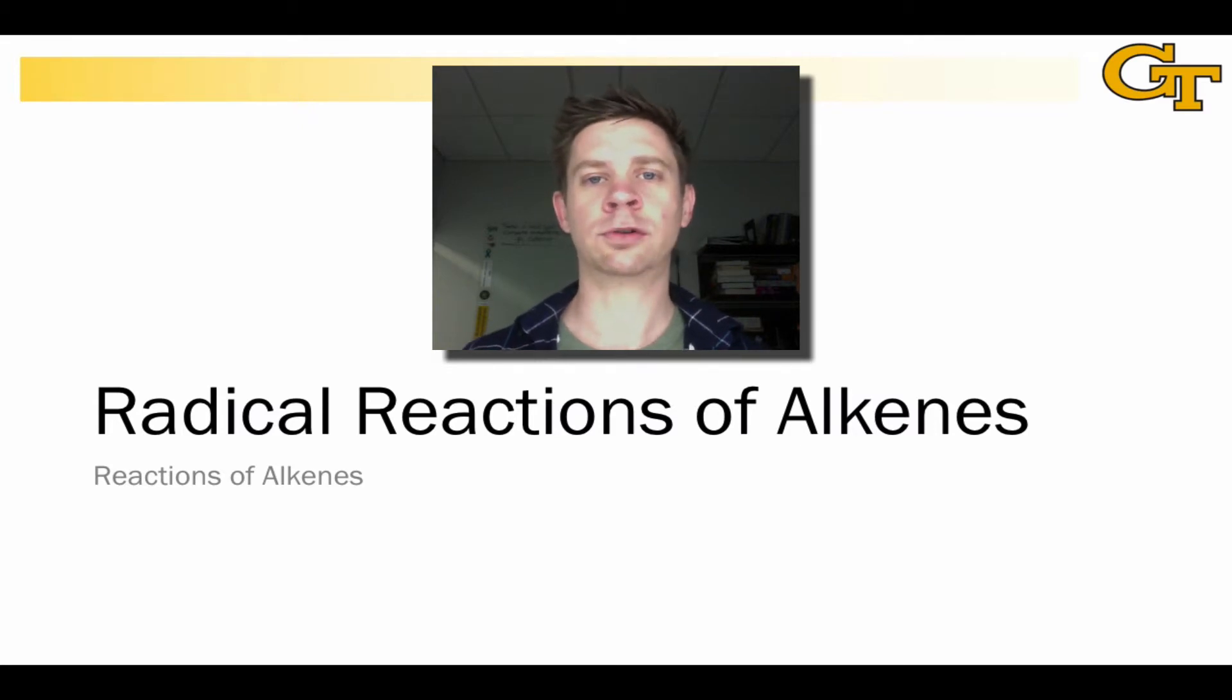In this lesson, we're going to look at the structures of radicals in general and the stability trends that flow from those structures. We're going to develop some new conventions for showing how electrons move in radical reactions, some of which we've actually already seen in previous discussions of mass spectrometry. And then we're going to look at examples of radical reactions, including a radical-promoted hydrohalogenation reaction with anti-Markovnikov selectivity.